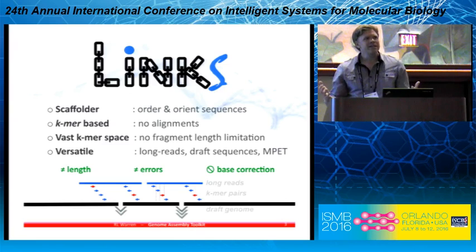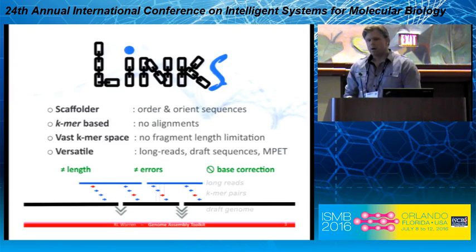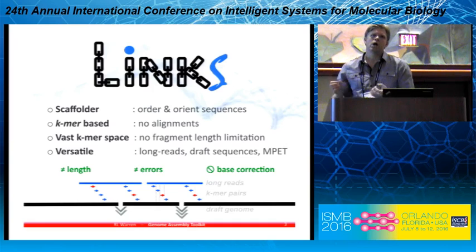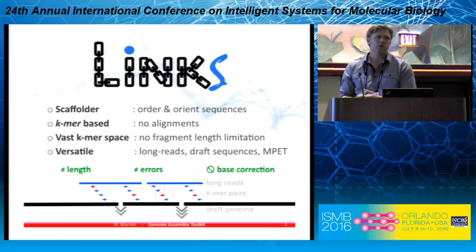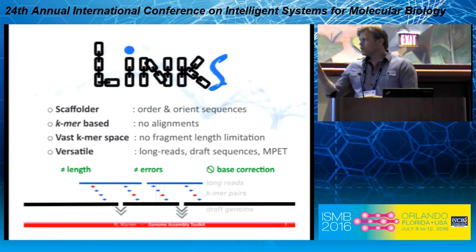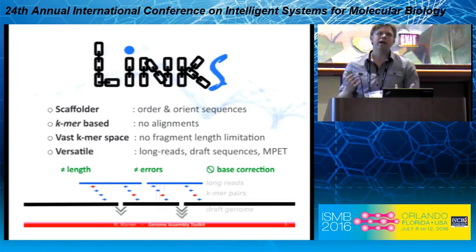You can explore a very vast k-mer space, so you're not limited to a fragment library at a specific size distribution. You can apply this to long reads, to another assembly done on a different k, you can use that to scaffold, and you can also use it now on MPET library data. Key features include reads of different lengths, different error profiles, and no need for base correction, although correcting your reads ahead of time will improve the scaffolding process.